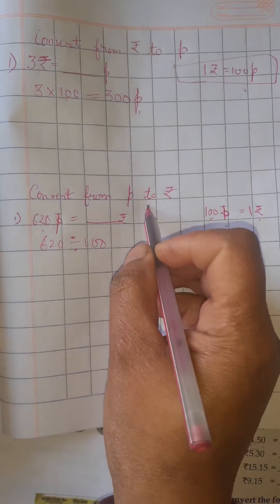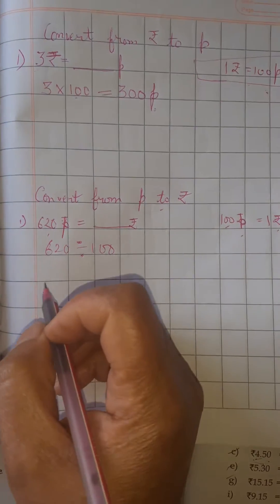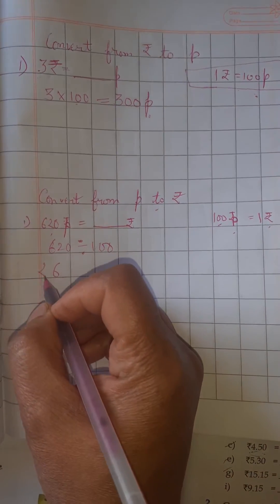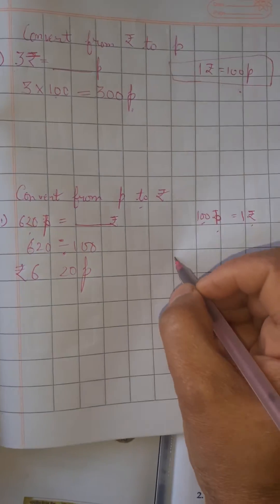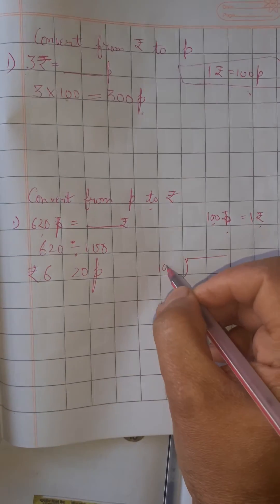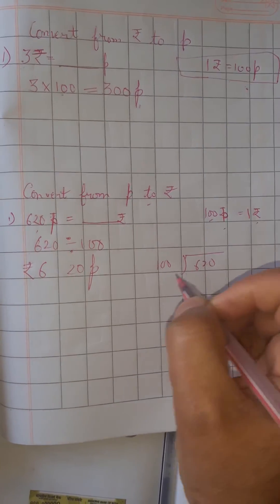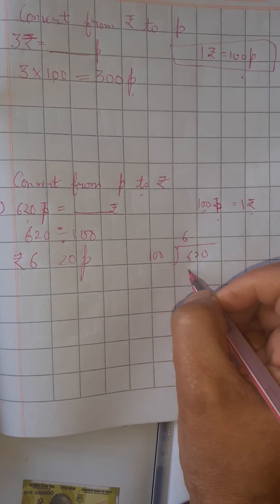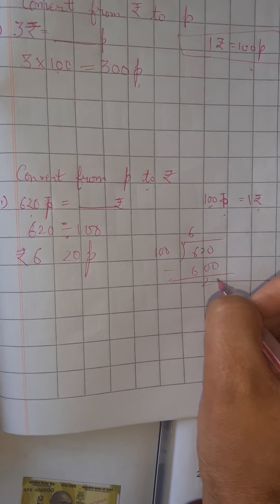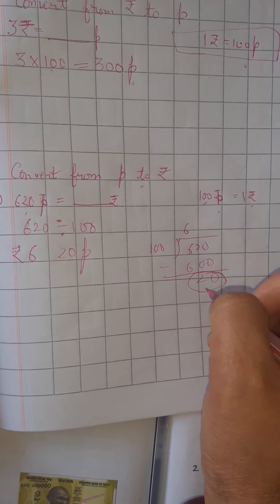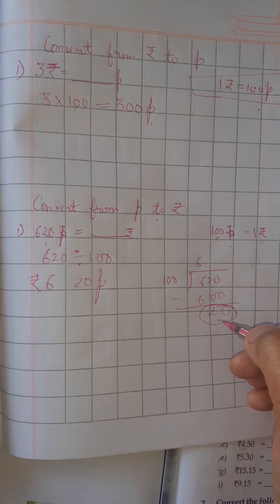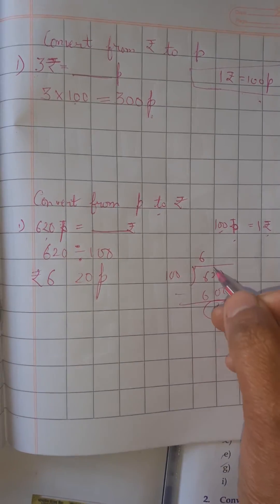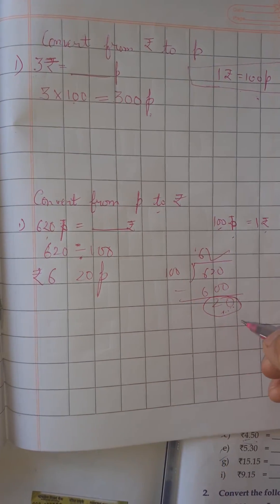620 divided by 100, you will get 6 rupees and 20 paisa. Because when you are dividing 620 by 100, 100 times 6 is 600 and the balance remainder is 20. This 20 you cannot convert into rupees because you need 100 paisa for 1 rupee, so this is the rupees and this one is the paisa.